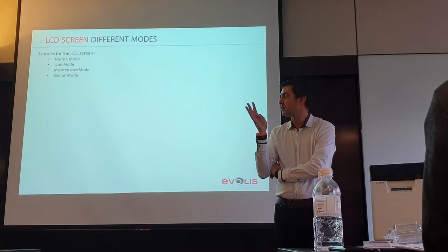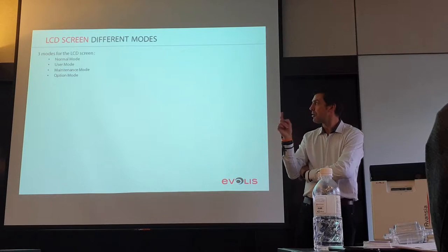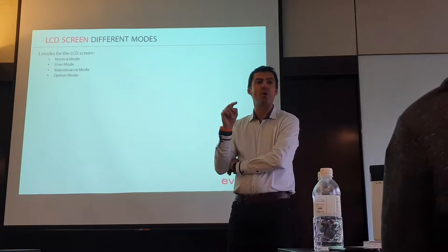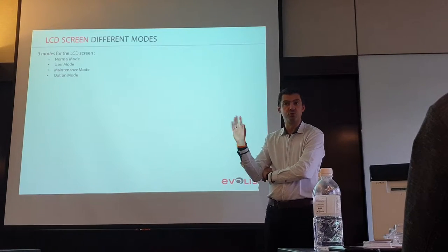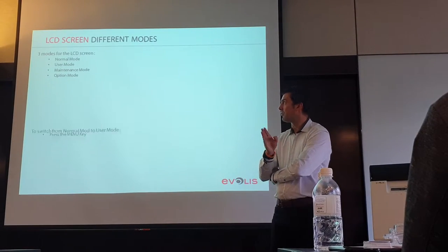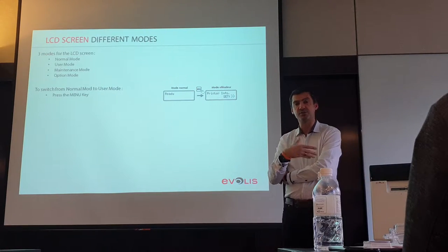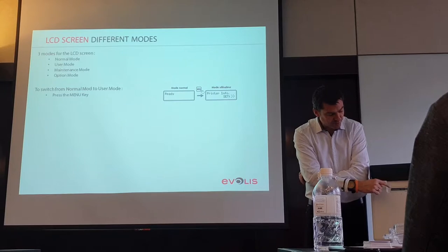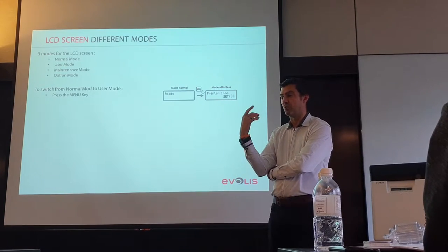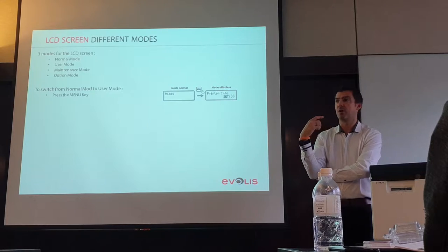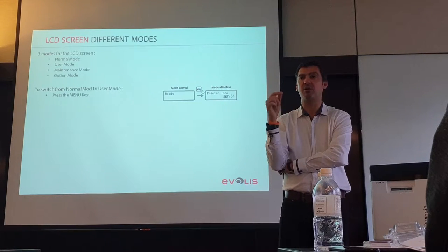What you need to remember is how to switch from normal mode to user mode, maintenance mode, and option mode. To go to user mode, simply press the Menu button. By default the system shows information; pressing Menu brings you to user mode where you can see and define settings — for example, if you use a clear film program you can define which clear film you are using.